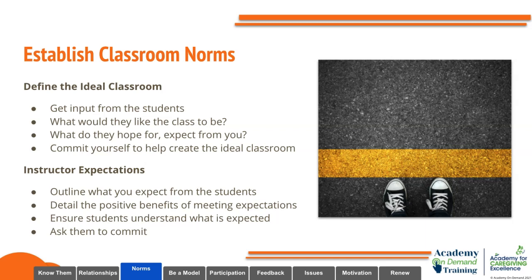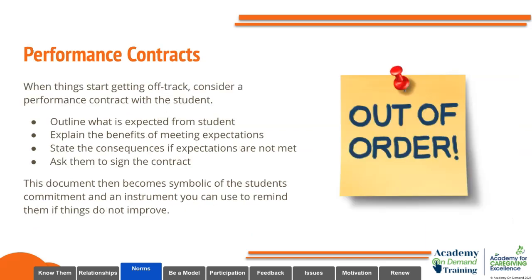When establishing classroom norms, you can work with your students to define the ideal classroom — get input from them, ask what they'd like the class to be like and what they hope for and expect from you, and commit together to help create this ideal classroom. The instructor should also share their own expectations: outline what you expect from each student and detail the positive benefits of meeting those expectations. If things go off track, consider a performance contract with the student — outline expectations, explain the benefits, state the consequences clearly if expectations are not met, and ask the student to sign it.